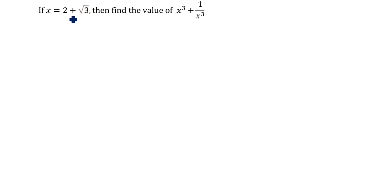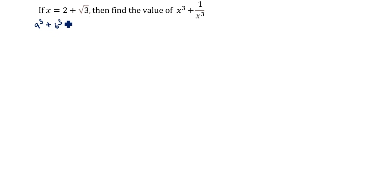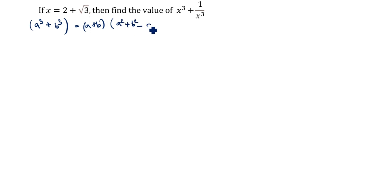If x is equal to 2 plus root 3, then find the value of x cube plus 1 by x cube. What is the formula of a cube plus b cube? a cube plus b cube is equal to a plus b, open the bracket, a square plus b square minus ab.